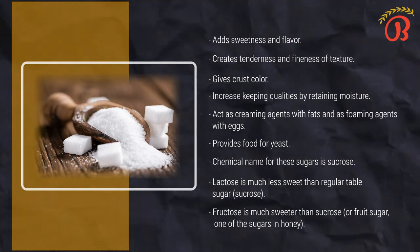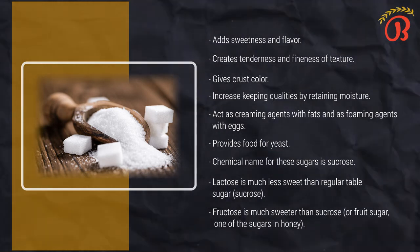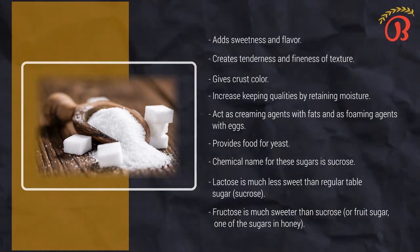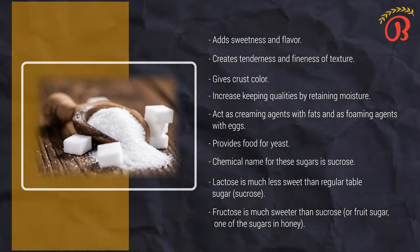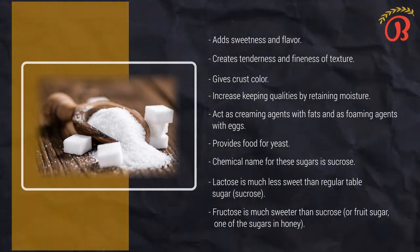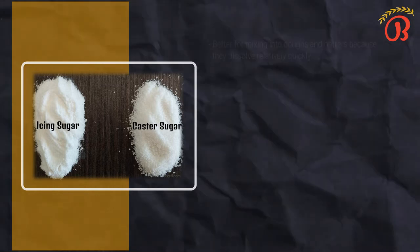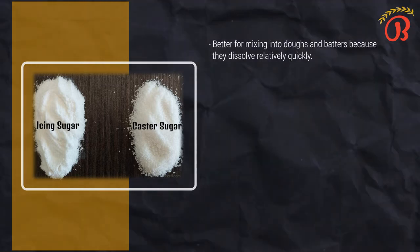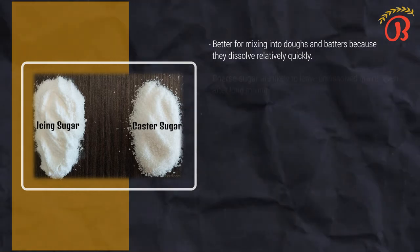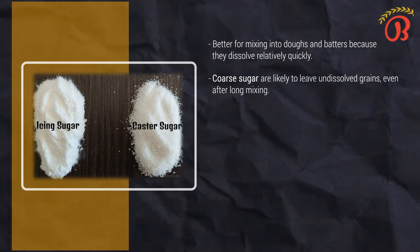For some purposes, this characteristic is desirable. For example, baked goods containing sugar stay moist longer than those with little or no sugar. For other purposes, this is undesirable. For example, spun sugar can be held for only a limited time because it attracts moisture from the air and becomes sticky. Sugar used for dusting can attract moisture and dissolve. Caster sugar, and in general finer granulations, are better for mixing into doughs and batters because they dissolve relatively quickly. Coarser sugars are likely to leave undissolved grains even after long mixing. These show up after baking as dark spots on crust, irregular texture, and syrupy spots.